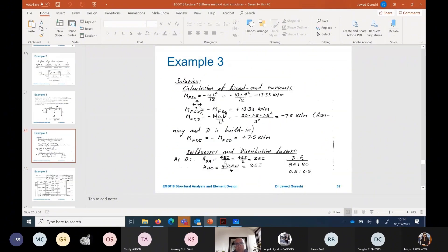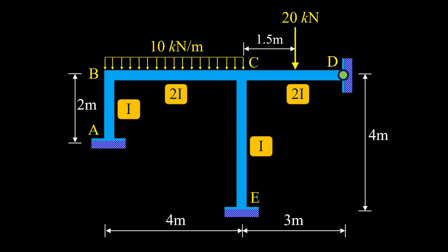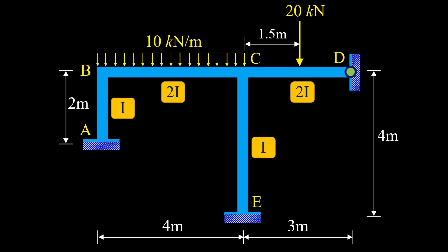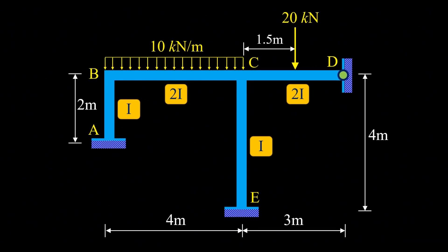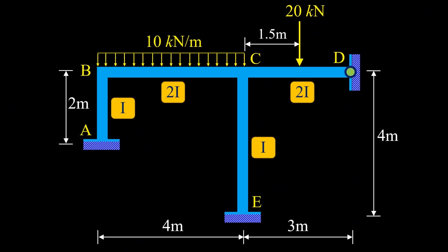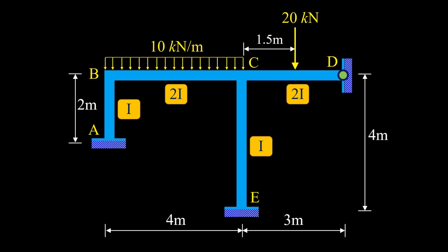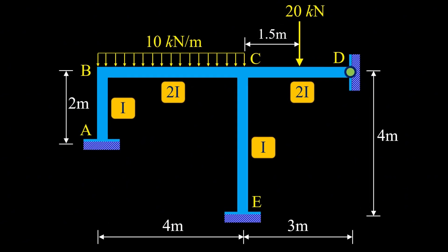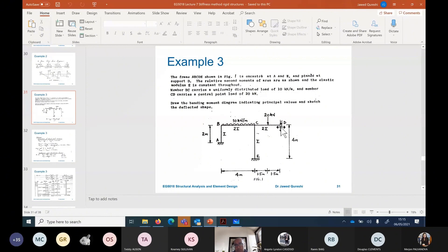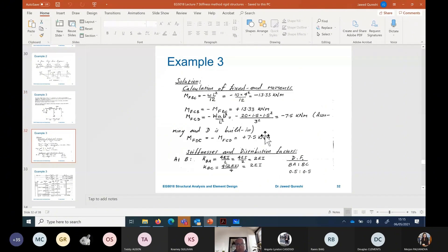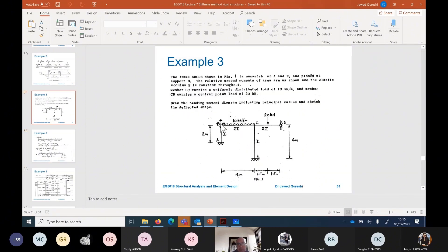Fixed end moments are found in spans BC and CD. Joint B will have MFBC, joint C will have MFCB for span BC, and for span CD joint C will have MFCD and joint D will have MFDC. Now we have to find stiffness and distribution factors. Joint B has two members connected, so it will have stiffness KBC. Remember that the far end is fixed.